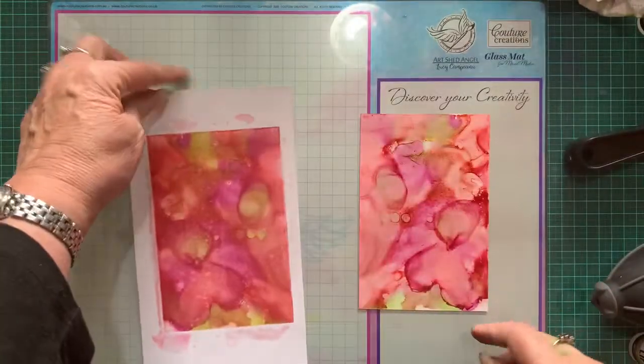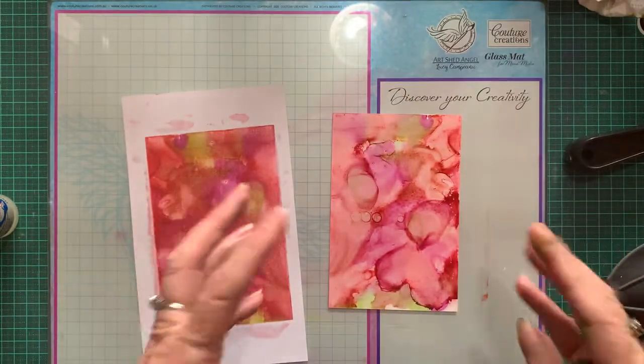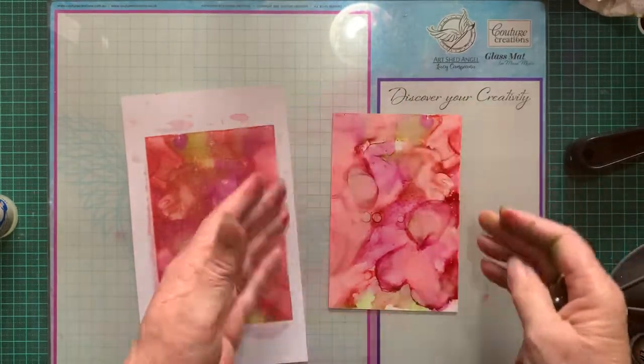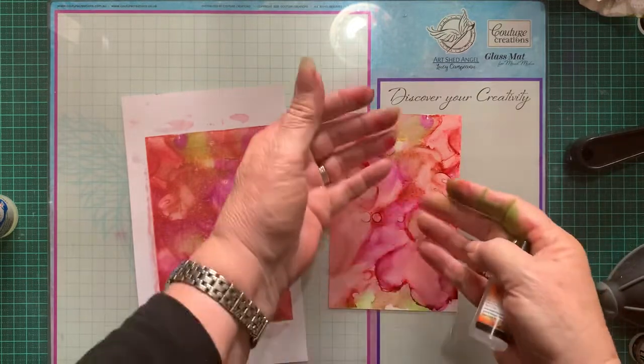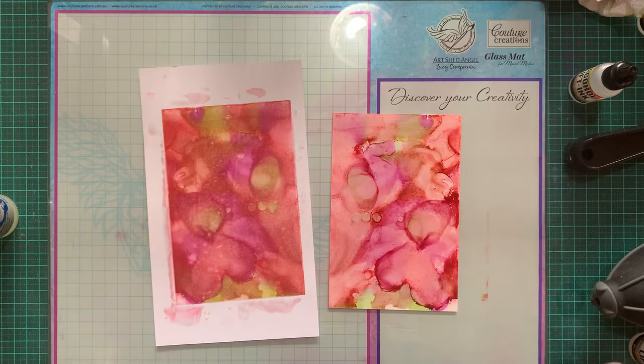And then you can still keep that and do maybe a die cut, and put the die cut over that. The alcohol ink will show through all the spaces that are cut out. Well, I hope this all makes sense and I haven't mucked it up too much.